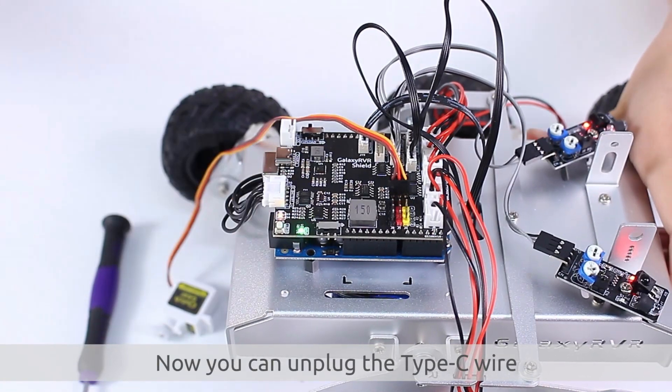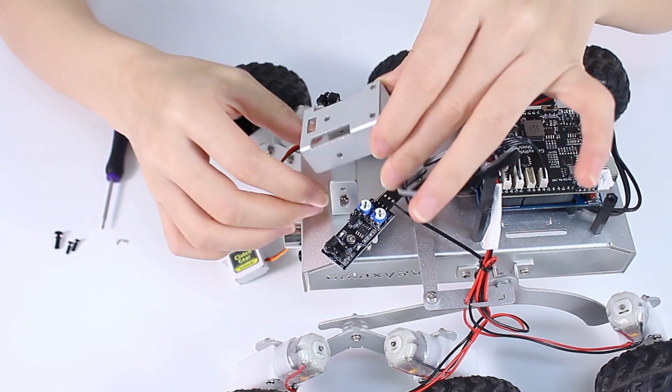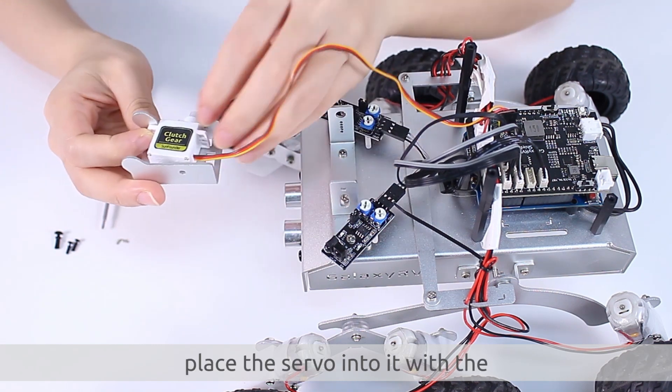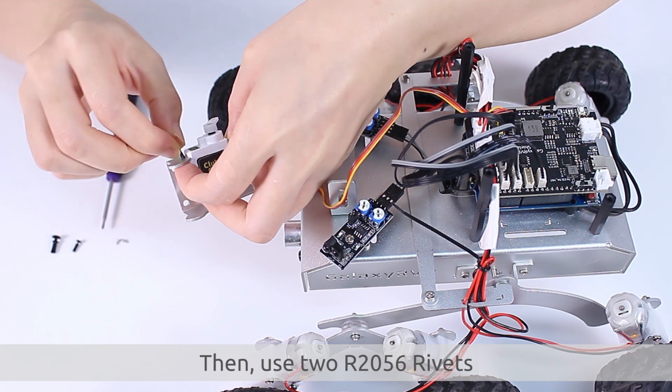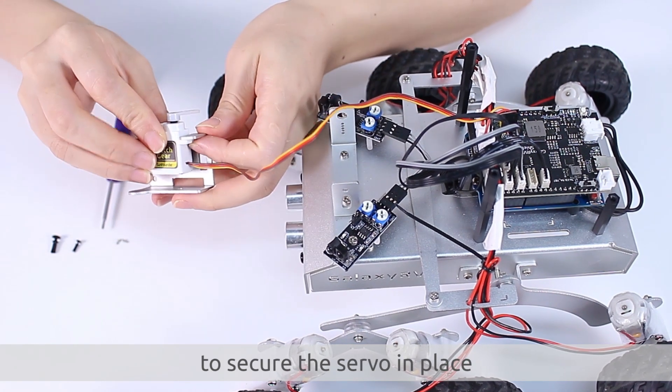Now you can unplug the Type-C wire and turn off the power. Flip plate die. Place the servo into it with the servo wire facing backwards. Then, use the R2056 rivets to secure the servo in place.